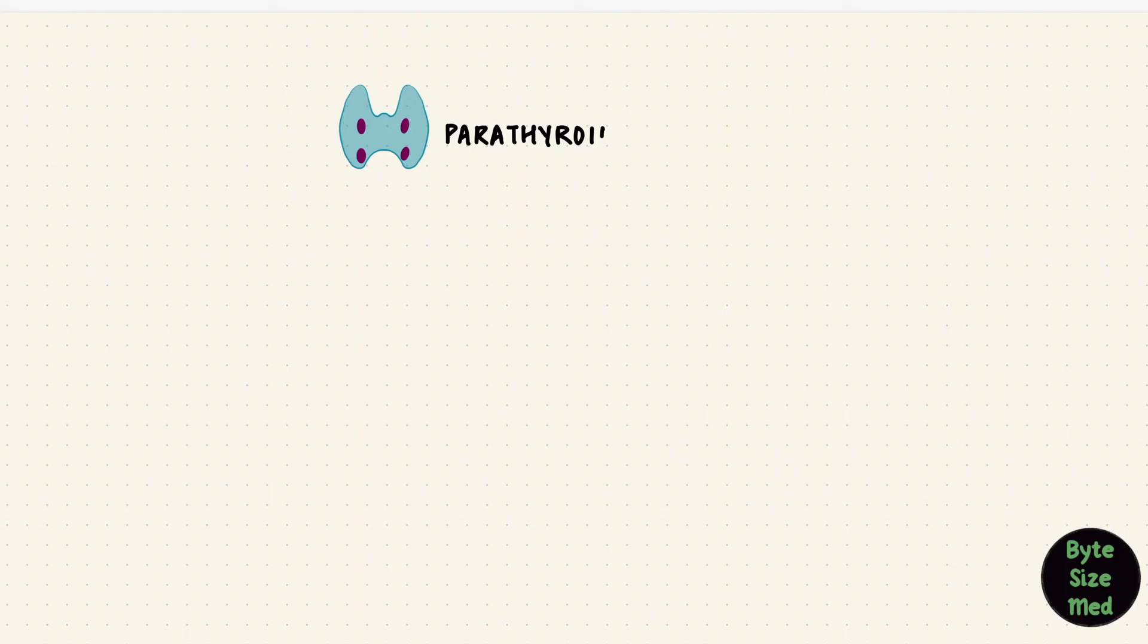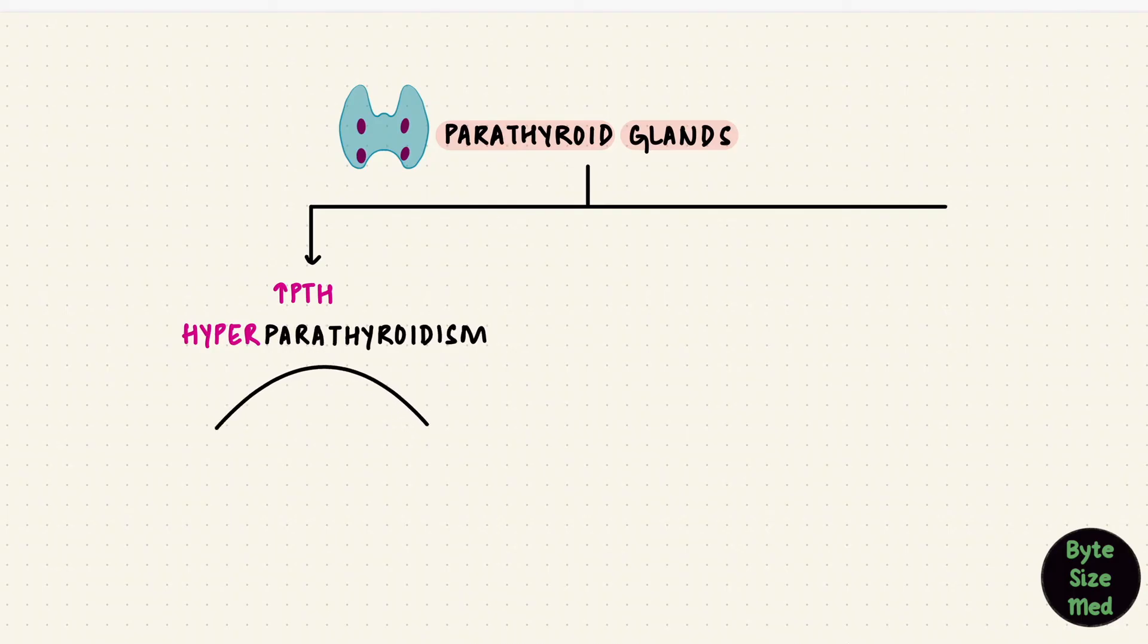Sometimes things can go wrong. If the parathyroid glands produce too much PTH, that's called hyperparathyroidism. They could be doing this because there's something wrong with the gland itself. That's primary hyperparathyroidism. But if the gland is fine and something else is telling it to produce more PTH, like for example low calcium from chronic renal failure, that is secondary hyperparathyroidism because the gland is fine.